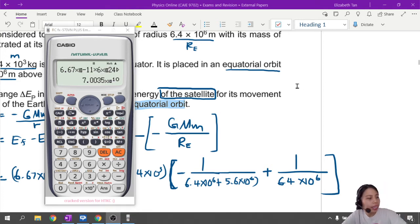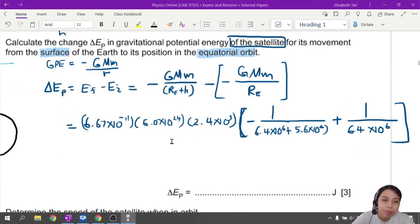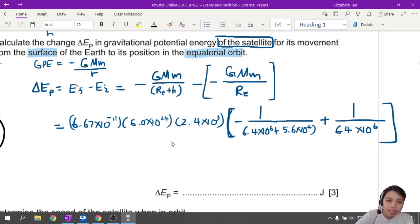Plus this other fraction, 1 over 6.4 times 10^6. You could do algebra and all that lah, but if you press something wrong, many steps, you will get a wrong final answer. So if I hit equals, I get this value, which is... The beauty of this is, it gives me in standard form. If not, you press the SD lah. If it gives you a fraction. So 7.0 times 10^10. Beautiful. I like this calculator. Let's write it down.